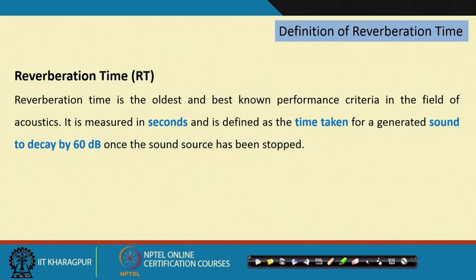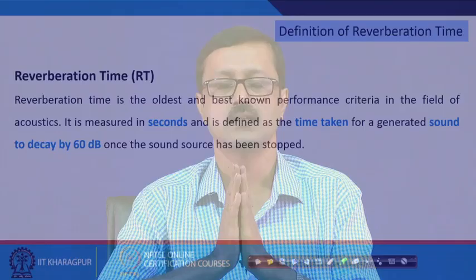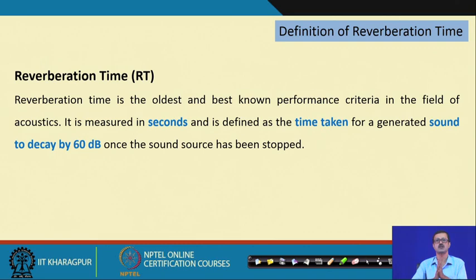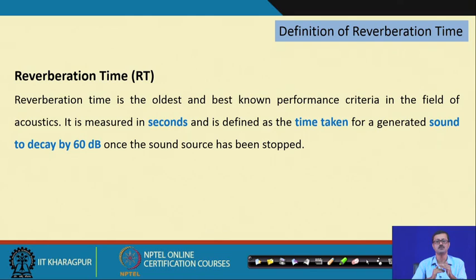Now the definition of reverberation time. Since reverberation is the sustaining of sound, I need to find how much time it will stay back in a particular room, and how it can be modeled and formulated. Reverberation time is defined as the amount of time — measured in seconds — for the sound level to drop by 60 dB. Suppose a sound level is 100 dB in steady state; how much time will it take to fall to 40 dB? That is a decay of 60 dB.